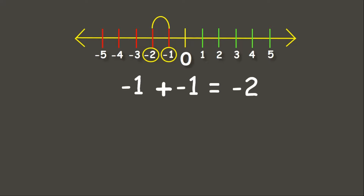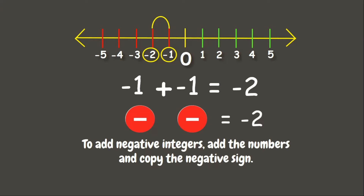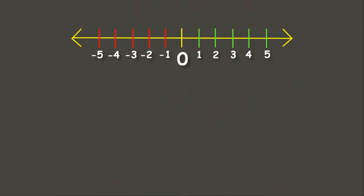It means that when we add negative 1 and negative 1 we get negative 2. Now let us solve this using counters. We have one negative chip plus another one negative chip. If we count them, we get two negatives. It means that when adding negative integers, we simply add the numbers and copy the negative sign — and since it is negative, we need to put the negative sign.